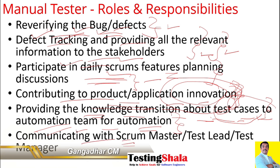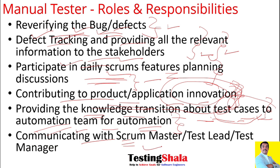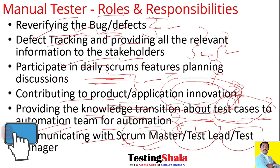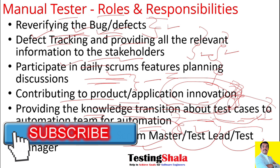If you are working in agile, you will be working closely with the scrum master. If working in another model, you will interact with a test lead or test manager. It is your responsibility to continuously interact with these stakeholders and provide as much information as possible in your day-to-day activities as a manual tester.